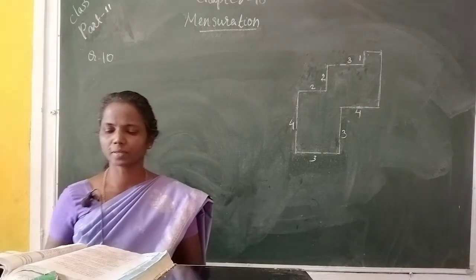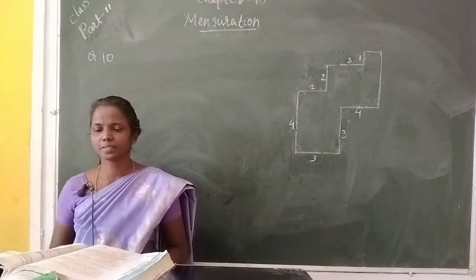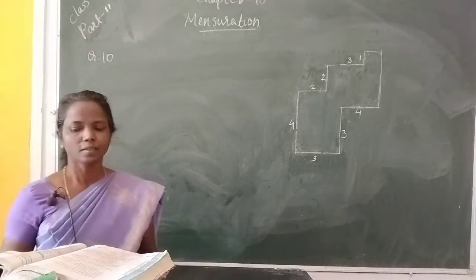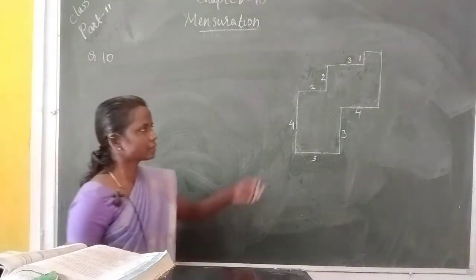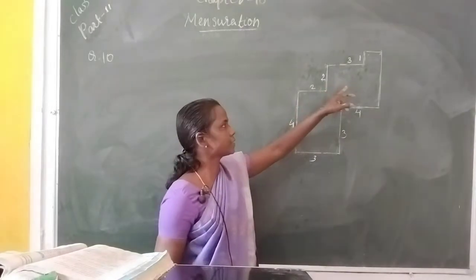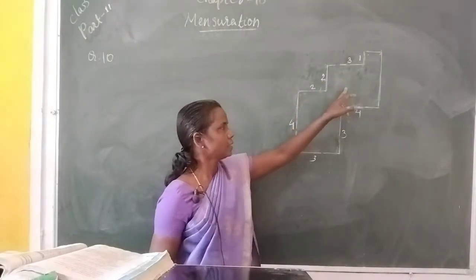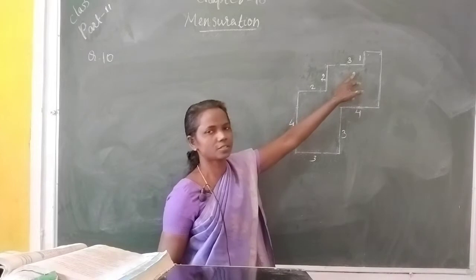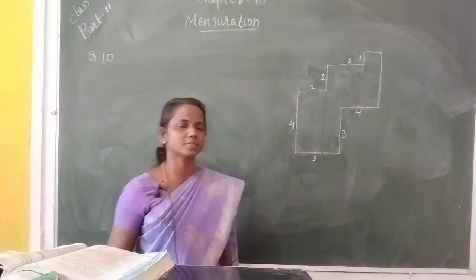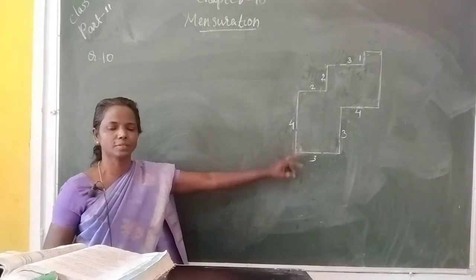Next, question number 10. By splitting the following figure into rectangles, find their area. This figure is given. You split this figure into rectangles — divide this figure into rectangles and find out its area. Measures are given in centimeters.